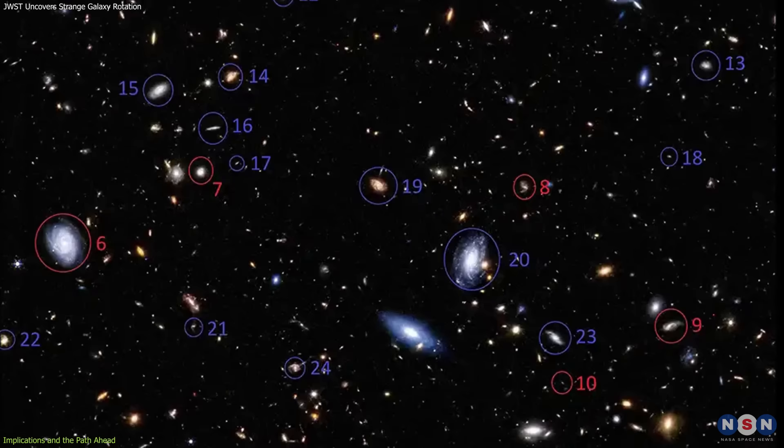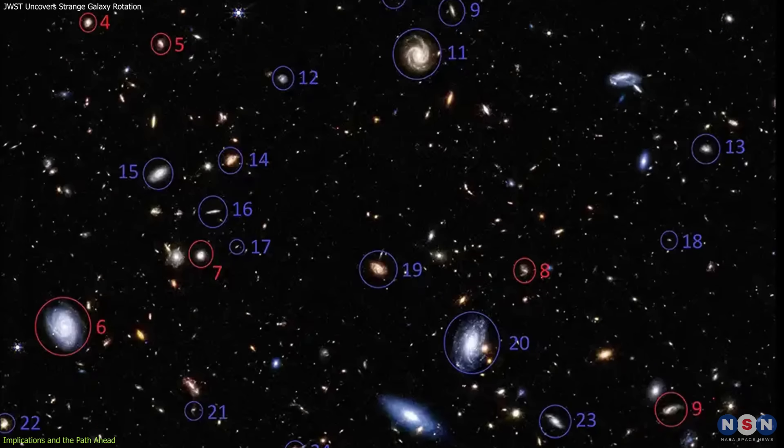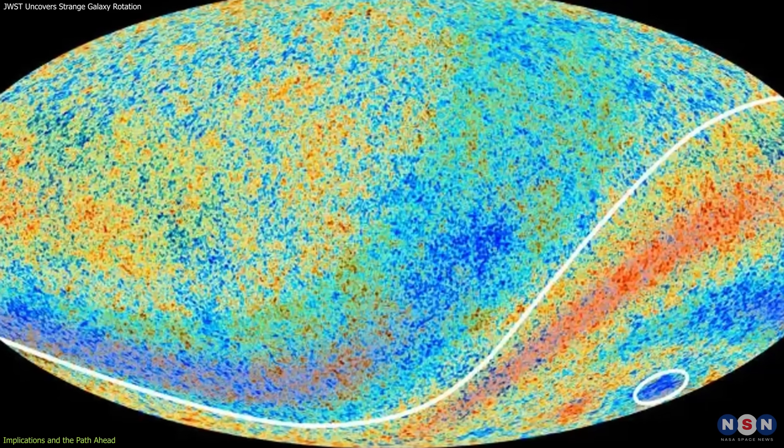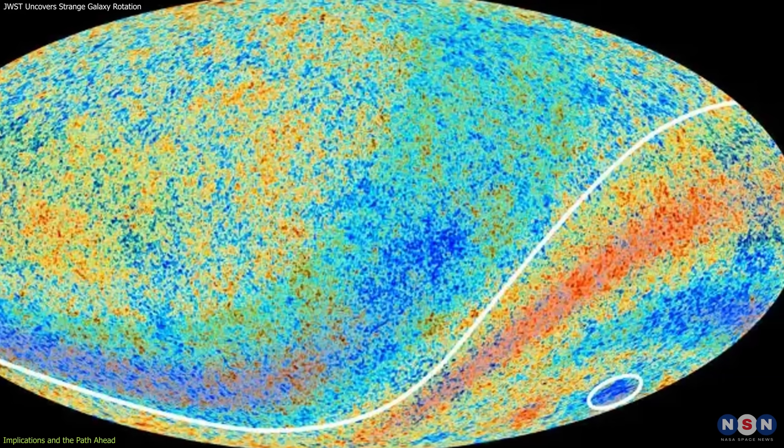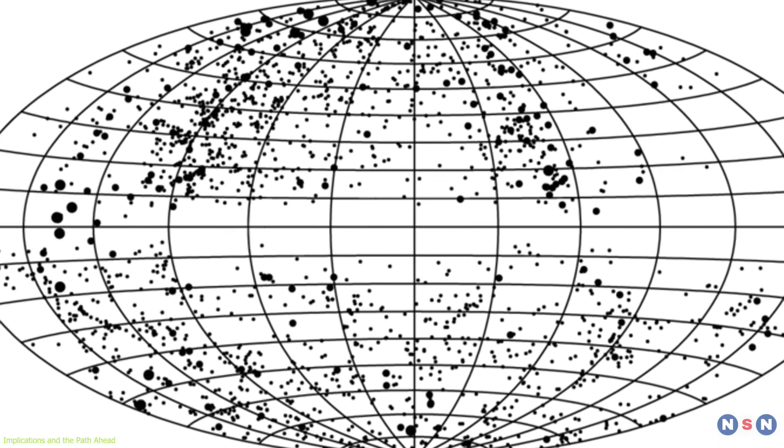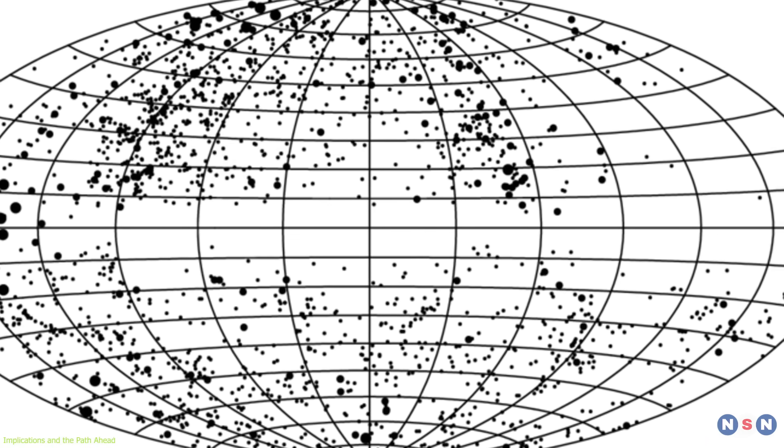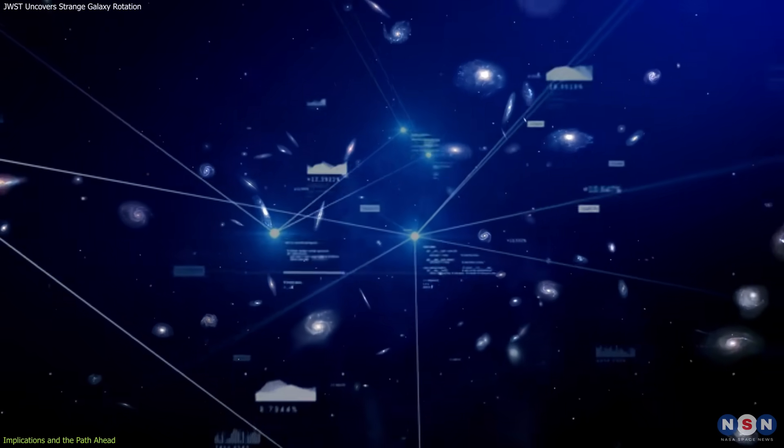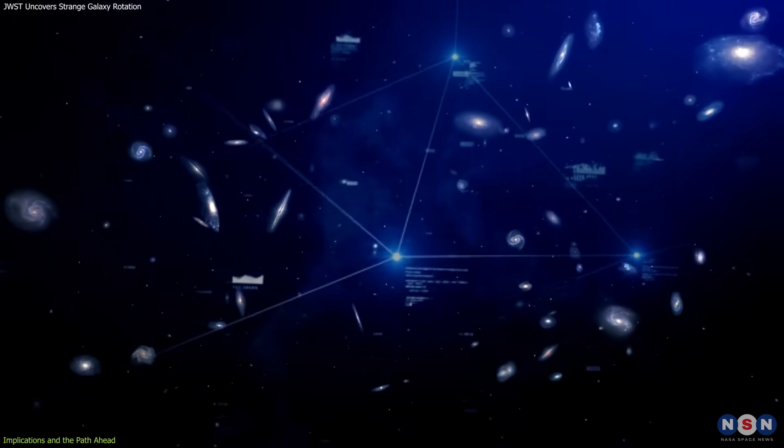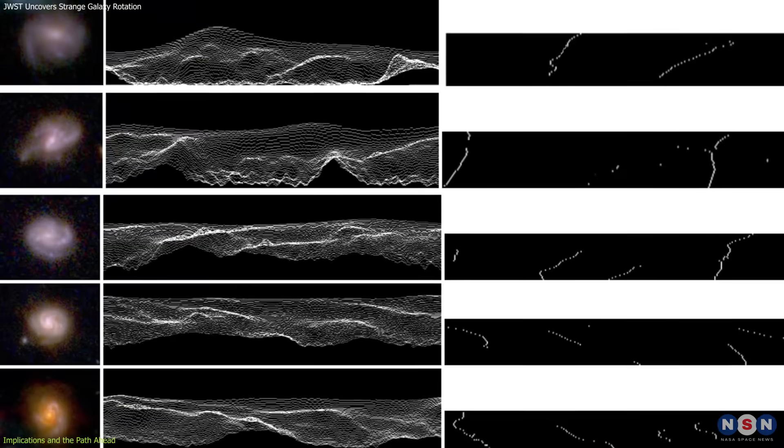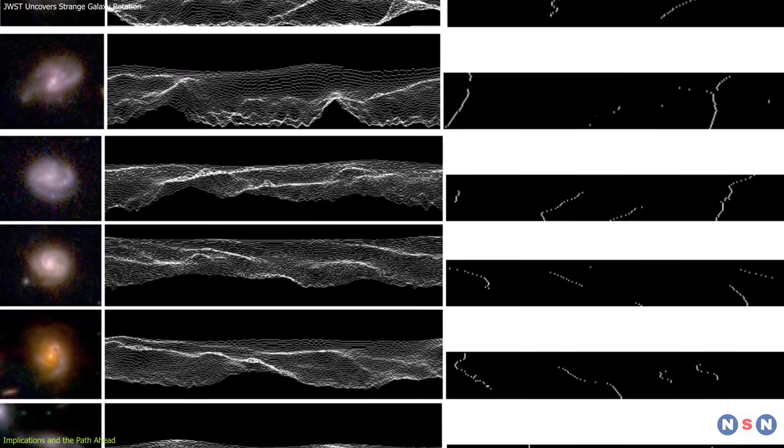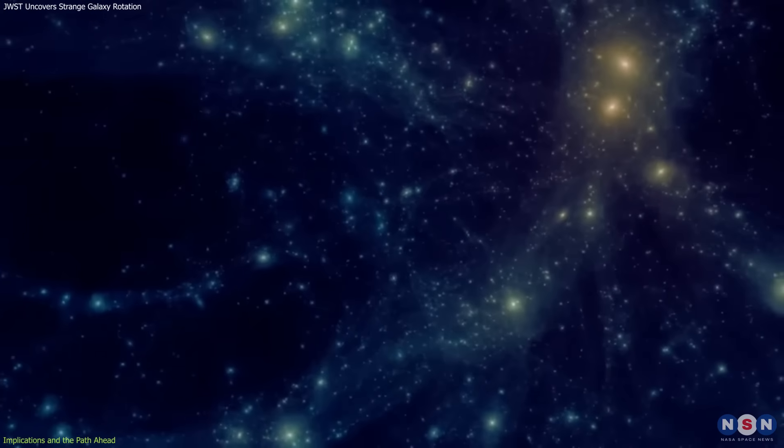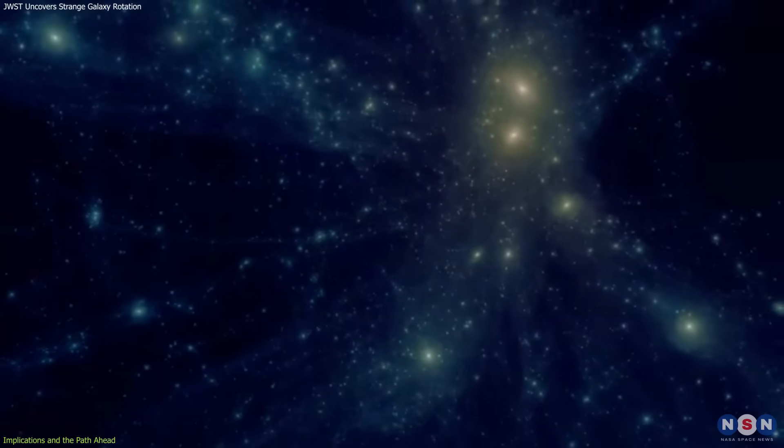It's also worth noting that this isn't the first time an apparent cosmic asymmetry has been observed. From the axis of evil anomaly in the cosmic microwave background, to hemispheric differences in galaxy distribution, hints of directionality have surfaced before, but none have reached the statistical clarity or scale required to rewrite the rules. Perhaps this spin alignment is another anomaly that fades under scrutiny, or perhaps it's part of a larger pattern we've yet to fully understand.